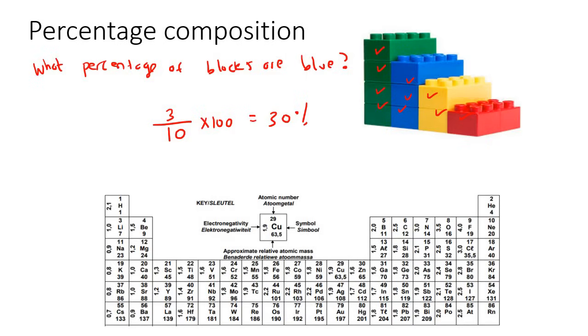If I asked you what percentage of the blocks are green, you would say 4 out of 10 times 100. Yellow is 2 out of 10, and red is 1 out of 10.